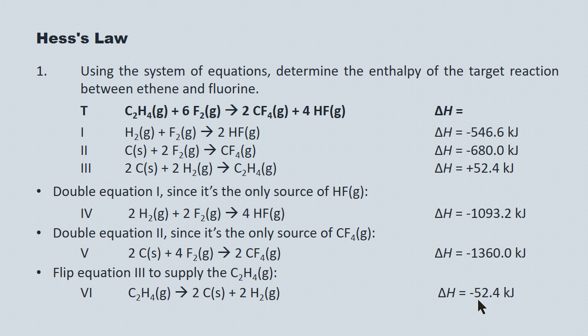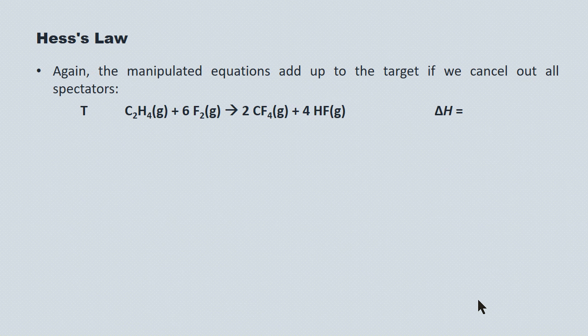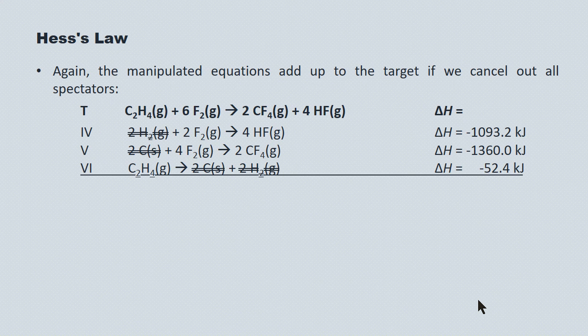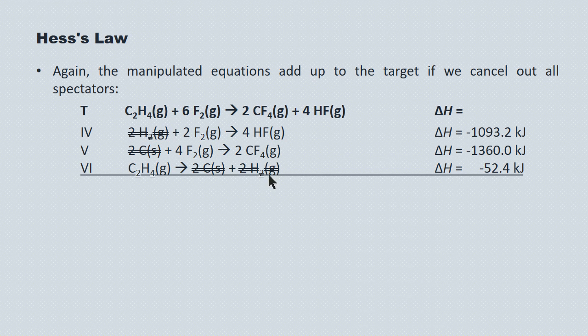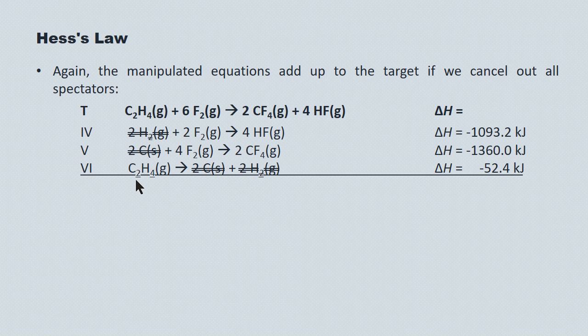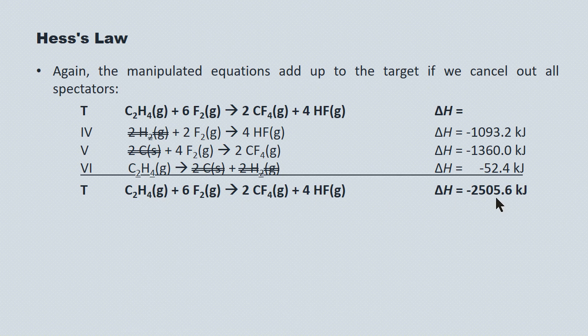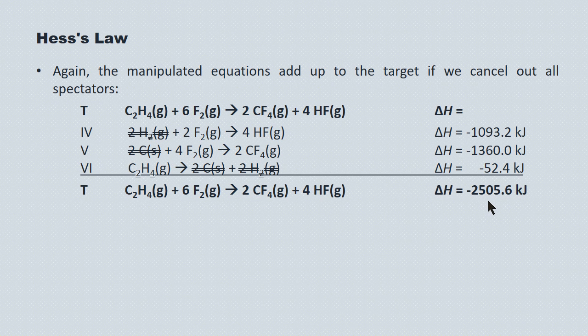So those are our three manipulations. Let's look at our target and our system of equations now all on the same page. So here's our target, and here's our manipulated system of equations. You'll see that a great many things cancel out. And in fact, everything that doesn't go into the target should cancel out as a reactant on one side and a product on the other. So the hydrogen cancels out, and the carbon cancels out. And what we have left is our target equation. So we add up the chemical reagents, and we add up the enthalpies, and we have the enthalpy for the target equation. Negative 2505.6 kilojoules. So the reaction is highly exothermic.